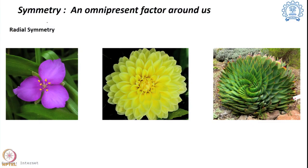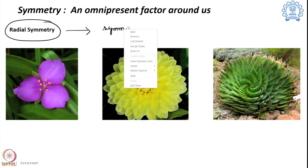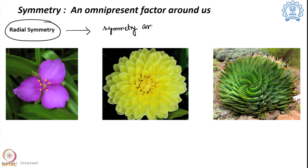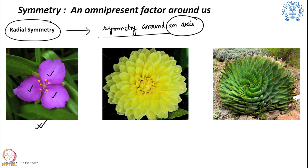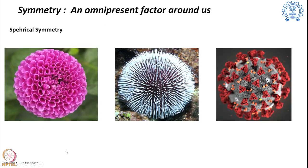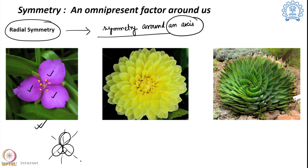Then we go to the next one, known as radial symmetry. In radial symmetry, we find the symmetry around an axis. Previously we were looking at everything around a plane; now we are looking around an axis. For example, take this first flower — we can see there are three different petals that are symmetrically arranged such that if I rotate 120 degrees around an axis, I find a similar system. The angle between them is actually 120 degrees.